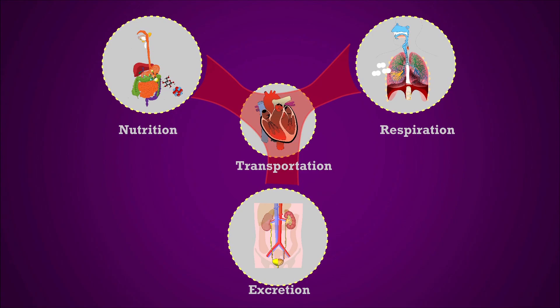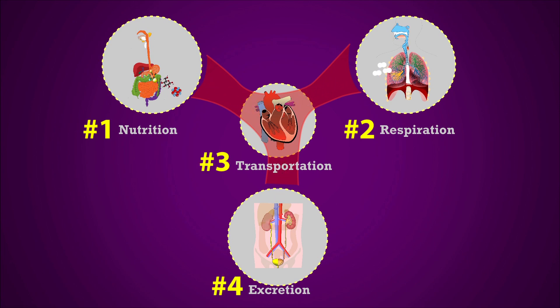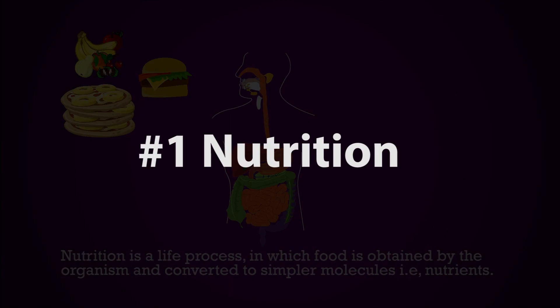In this chapter, we will learn about four important life processes: 1. Nutrition, 2. Respiration, 3. Transportation, and 4. Excretion.